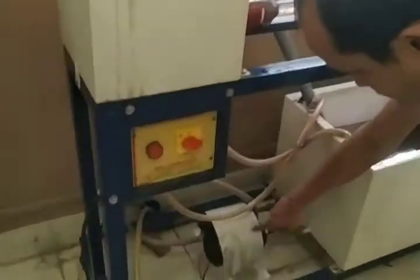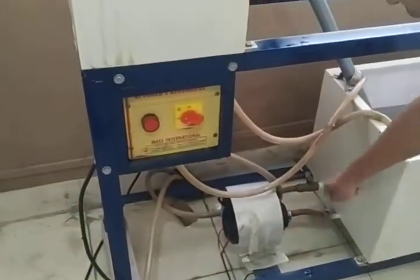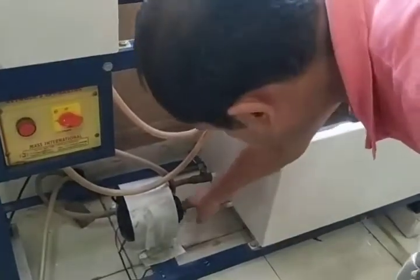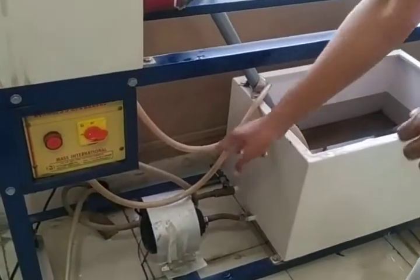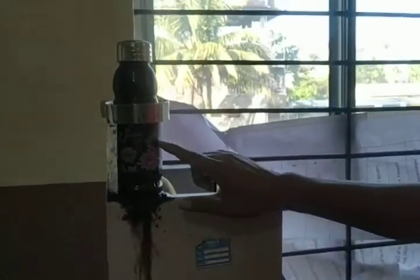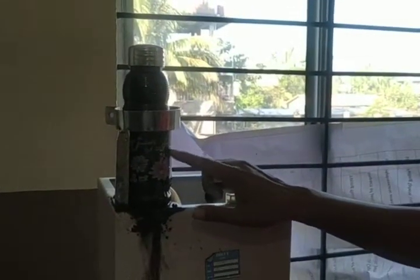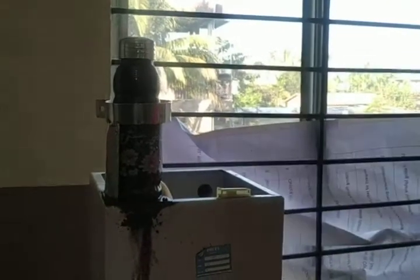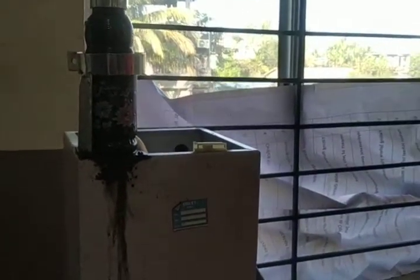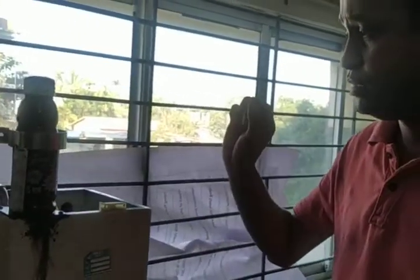Students, this is our Reynolds apparatus. In this apparatus you will find one motor with a pump. Water will basically come from this side and it will move here to this tank. Here we are considering potassium permanganate to identify the color, basically the pattern of the flow, whether it is laminar flow, turbulent flow, or transition. We can observe by using potassium permanganate.